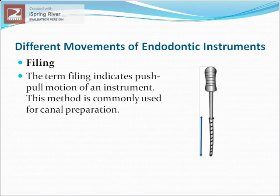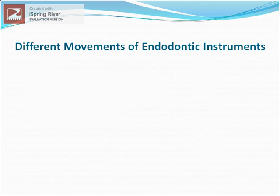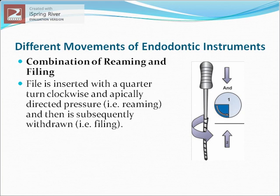The second endodontic movement is filing. Filing indicates a push-pull motion of an instrument and is commonly used for canal preparation, in which the instrument is pushed inside the canal to full length and then pulled out. A combination of reaming and filing can also be used, where the file is inserted with a quarter-turn clockwise and apically directed pressure, then subsequently withdrawn by a pulling-out motion.